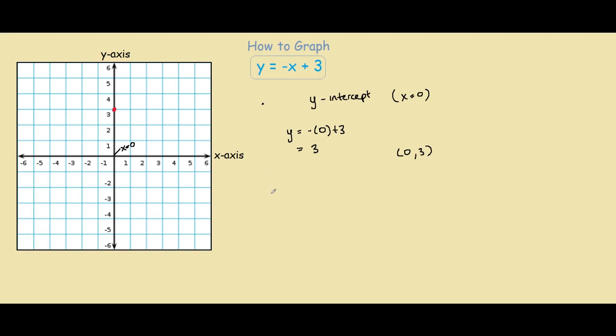Our next point on the graph will be found using the slope. For those who don't know what slope is, it's simply rise and run. To find the slope from the equation, we look at the number in front of the x. This number is called the coefficient, and in this case, it is negative 1.